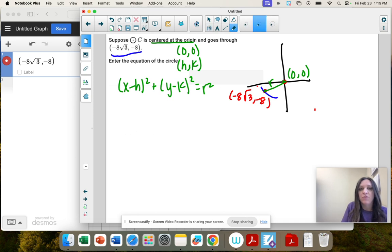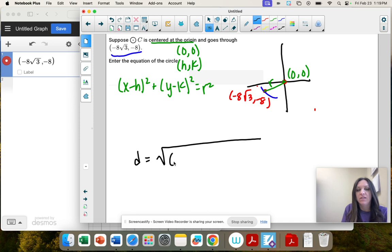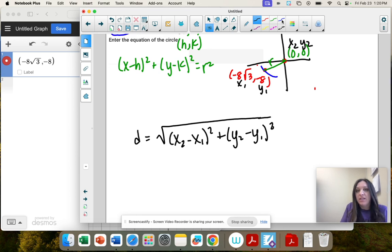Actually, I'm going to just move that lower. So distance is x2 minus x1 squared, y2 minus y1 squared. So I like to label my points x1, y1, x2, y2. And then we're just plugging it in the formula.